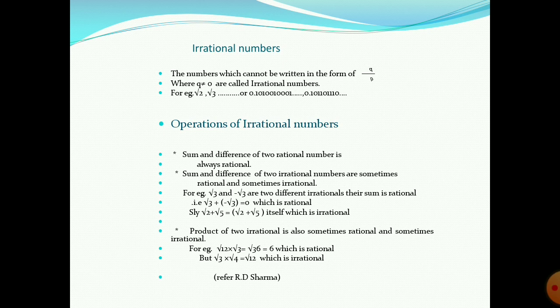Now let us discuss about the operations of irrational numbers. The sum of two rational numbers is always rational. Similarly, the difference of two rational numbers is also always rational. But we see that the sum and difference of two irrational numbers are sometimes rational and sometimes irrational.